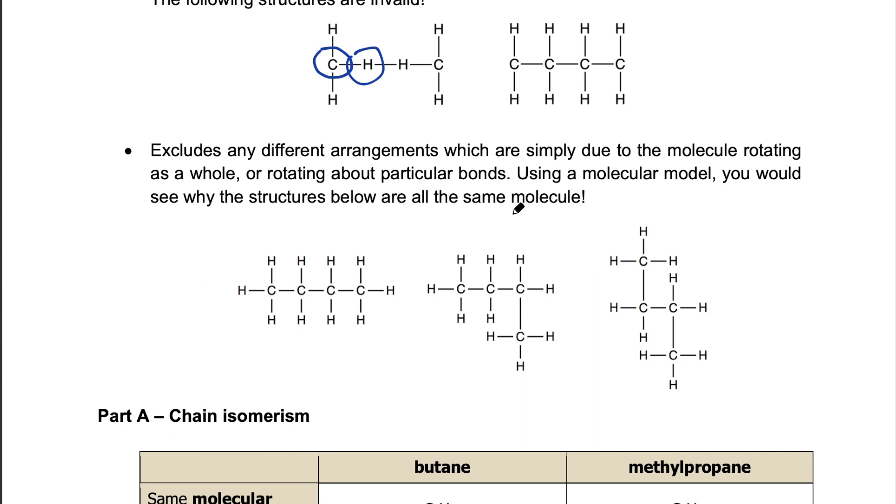The second important point is that structural isomers cannot be formed by just merely rotating the bonds. This is quite hard to imagine given that molecules are three-dimensional and are flexible. What I've drawn here below are three molecules and they are actually the same molecule. They are not isomers. These are all butane. So if we look at the molecular model, it would be much clearer. So let's switch over and take a look at these structures.